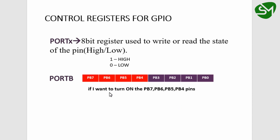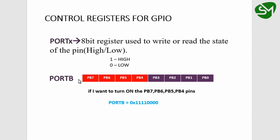Let's take another example. If I want to turn on pins PB7, PB6, PB5, and PB4, I can write an 8-bit binary value to the port B register, as we did for the DDRX register. I want to give 1 to those four bits and 0 to the remaining four pins, so I can write 11110000. After loading the 8-bit binary data to the register, I can convert this 8-bit data into equivalent hexadecimal.